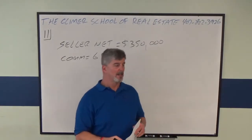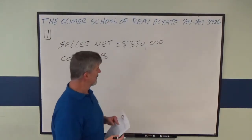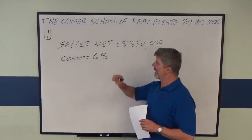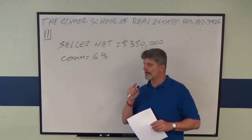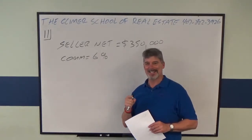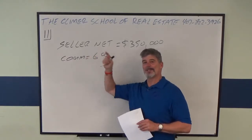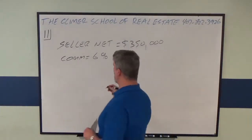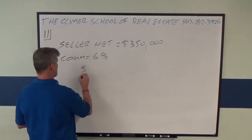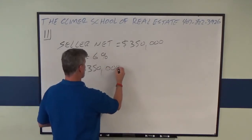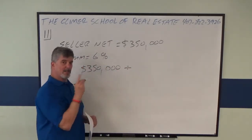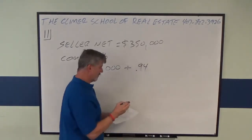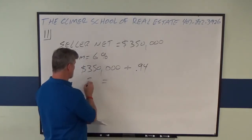Think about it this way: if the broker is getting six percent, that means the seller is getting ninety-four percent. So we're going to divide — because we're going backwards. You take the $350,000 that the seller wants to net, and divide by ninety-four percent, or 0.94. That means the sales price is $372,340.